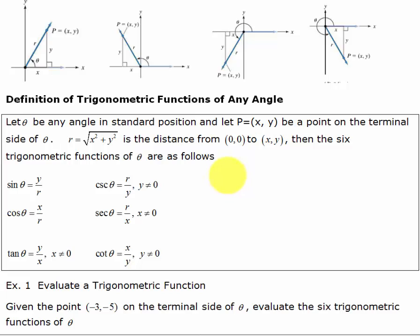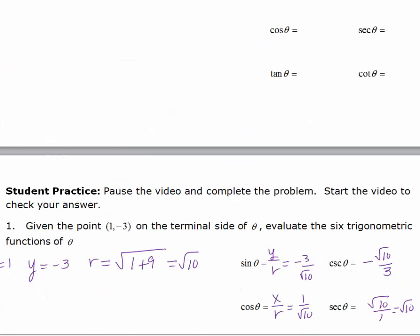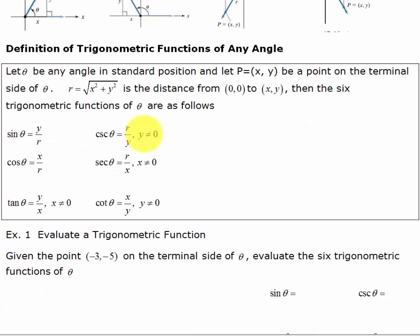The six trigonometric functions are as follows: sine is y over r, cosine is x over r, and tangent is y over x. The three reciprocal functions are the reciprocal of each — cosecant is r over y, secant is r over x, and cotangent is x over y.